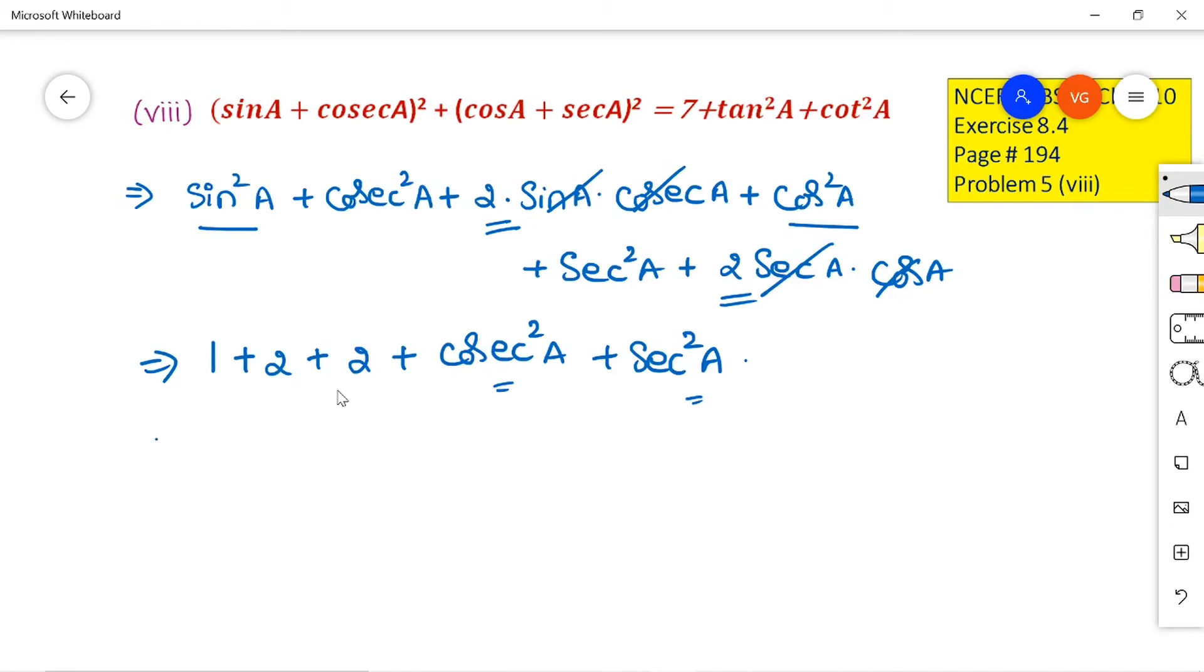That I can write it as 1 plus 2 plus 2 that I will write it as 5 plus cosec²A that I can write it as 1 + cot²A plus sec²A. We can write it as 1 + tan²A.